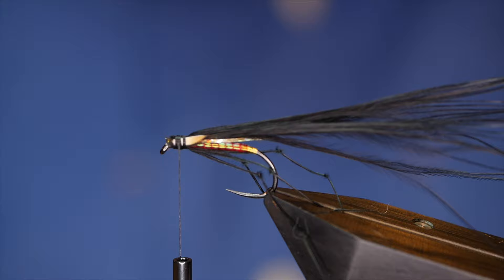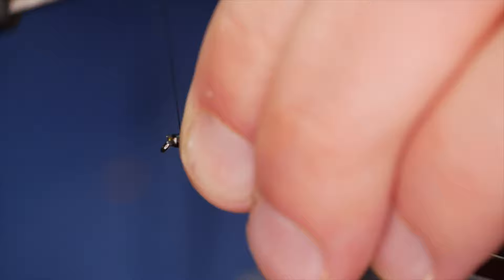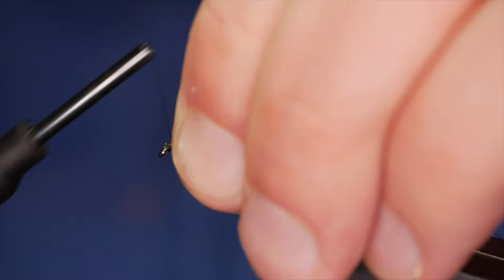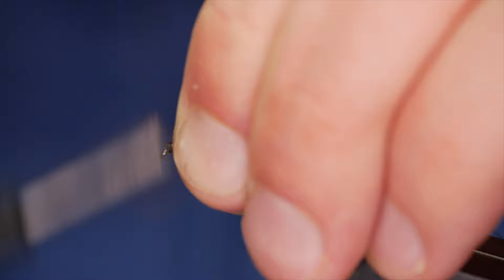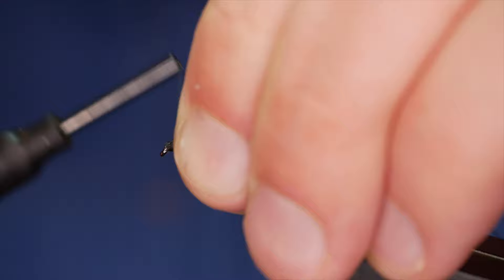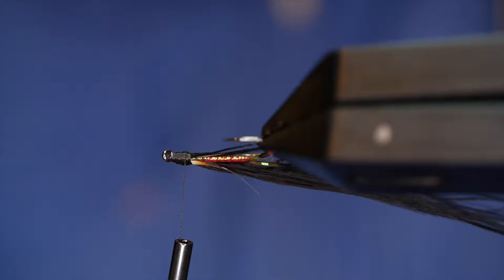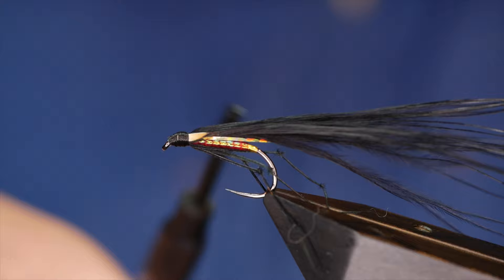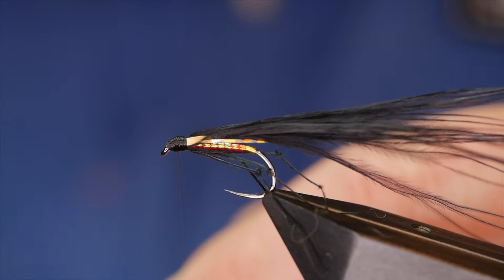What I want to also ensure is that I've not got any of that yellow showing through the head. This is one of the benefits of nano silk. I can use lots of turns to create a nice neat head. I'm just going to bring my vise around to make sure that I've got that jungle cock eye covered up. I want it to flash out of the sides, not in the head itself.